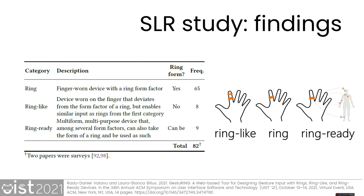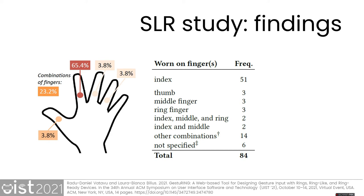Most of the devices encountered in the scientific literature fell into the first category of our ring taxonomy — that is, finger augmentation with a ring form factor device. However, the remaining 20% of devices deviated from the ring form factor by either augmenting more parts of the finger in the case of ring-like devices, or by targeting multiple forms and purposes as in the case of ring-ready devices. Most of the rings were intended to be worn on the index finger, and in 23% of cases, combinations of fingers were targeted, such as two rings worn on the index and middle fingers respectively.